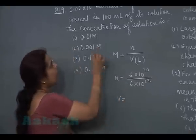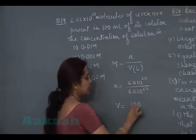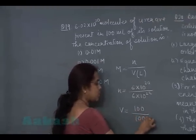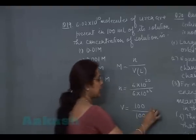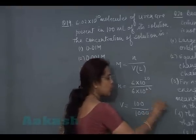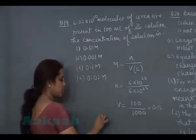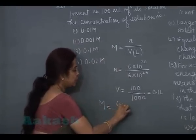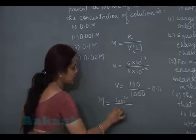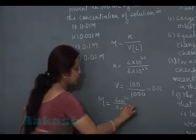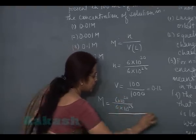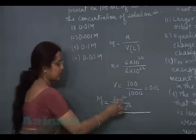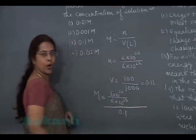Volume is given as 100 milliliters. Divide it by 1000 to convert it into liters. So that is 0.1 liter. It means molarity of the solution is 6 × 10^20 by 6 × 10^23. Volume of the solution is given as 0.1 liter.